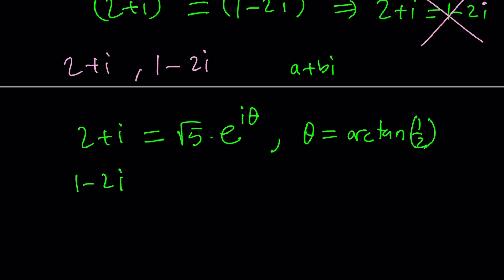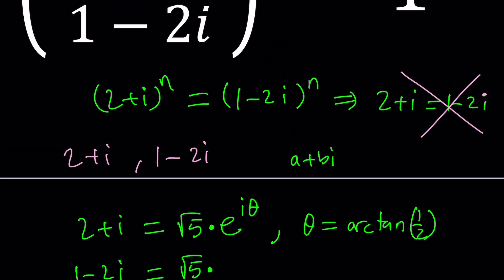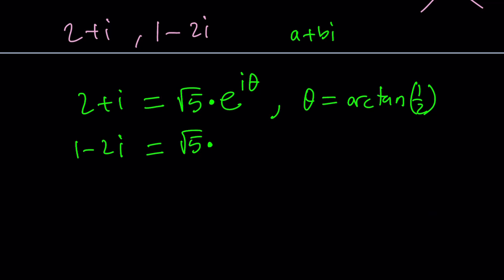What about 1 minus 2i? Uh-oh, it has the same modulus. That should not be a surprise. You know why? Because when you raise two complex numbers with different moduli to the same power, you cannot get the same answer. Does that make sense? Because you're going to have like a bigger number in comparison or something like that. Anyways, they have to have the same modulus. And that kind of makes sense because if you take the absolute value of the quotient, you get 1 because it's 1. So 1 minus 2i, let's go ahead and define that argument or angle as alpha, just to use a different thing.